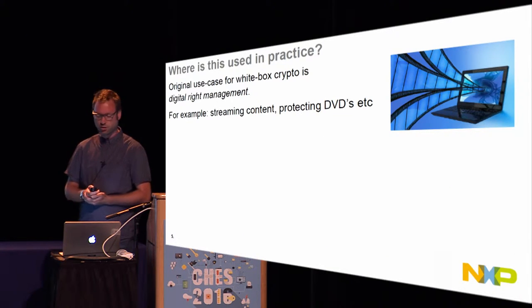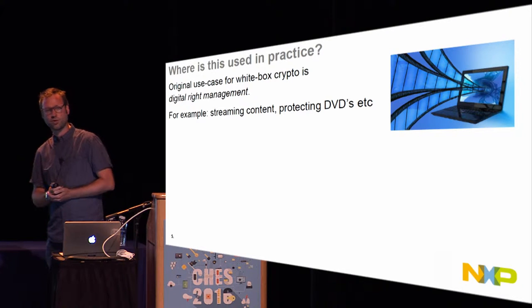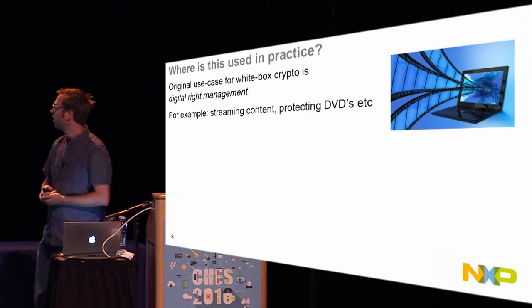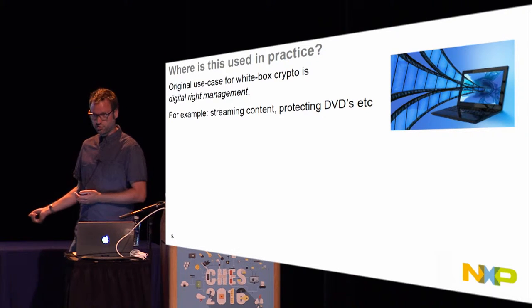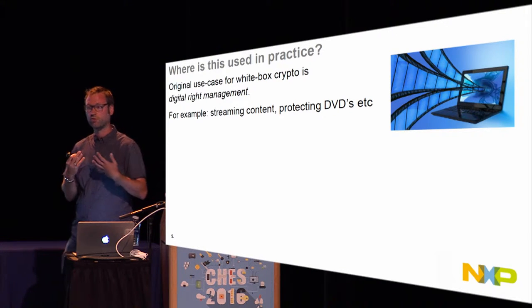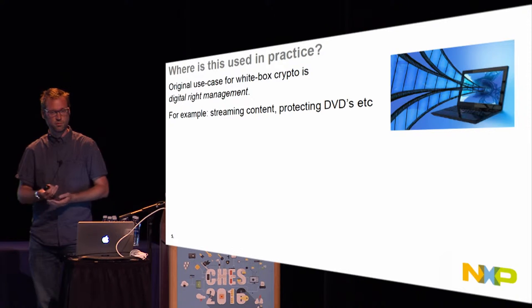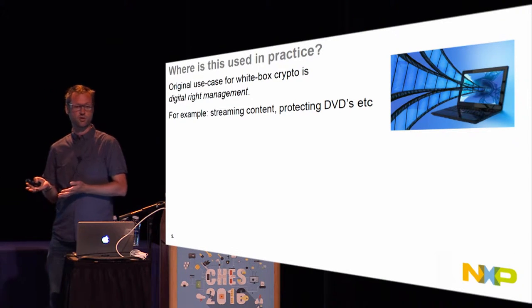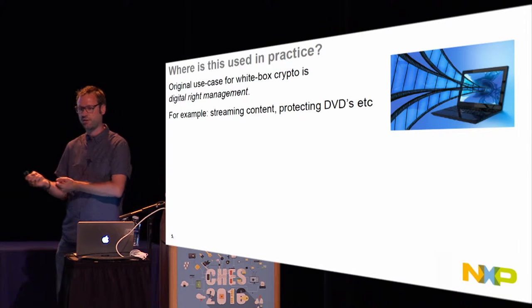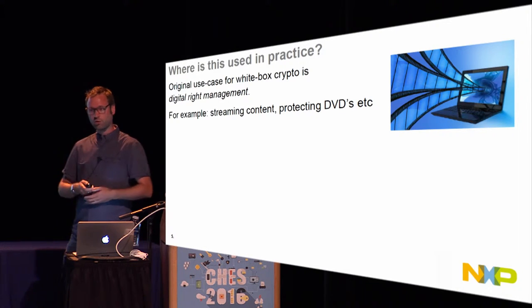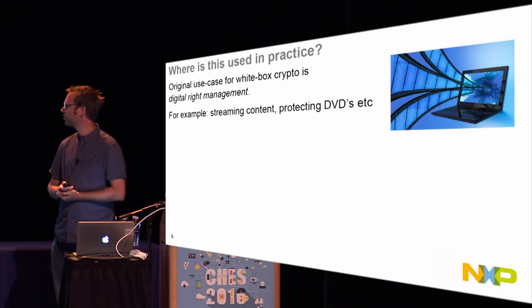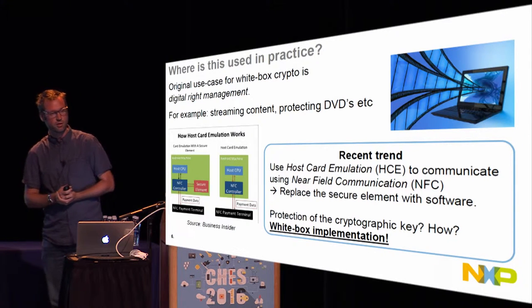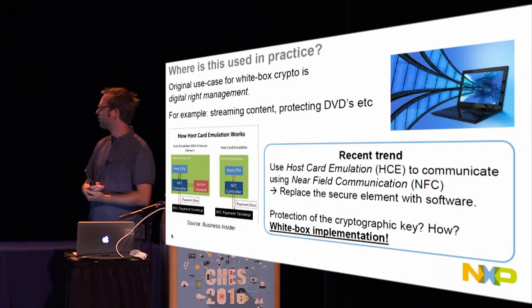The white box model is a very powerful attack model — the adversary can dump the memory, hook in a debugger, change registers, change values, or change code. This model was introduced in 2002 by Chow et al. in the setting of DRM applications — digital rights management. Think about streaming content: a movie coming to your set-top box or phone. As a user you want to decrypt it to watch the movie, but the content provider doesn't want you to extract the key and share it.